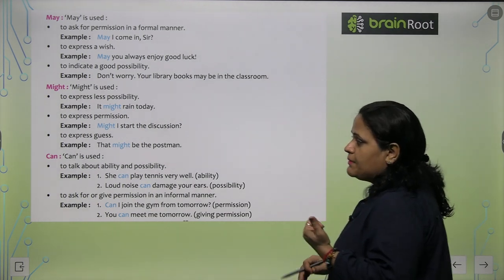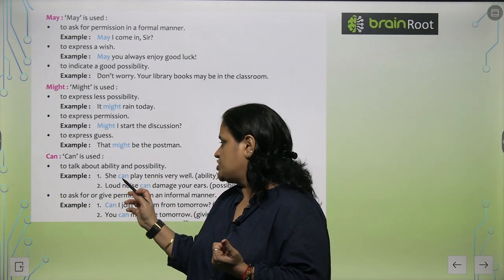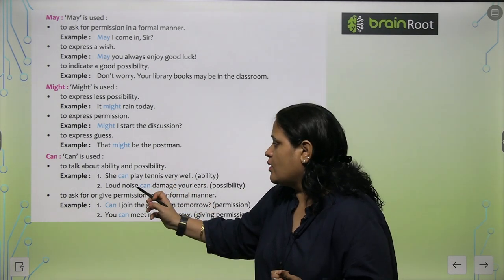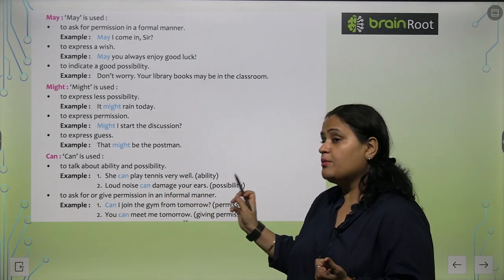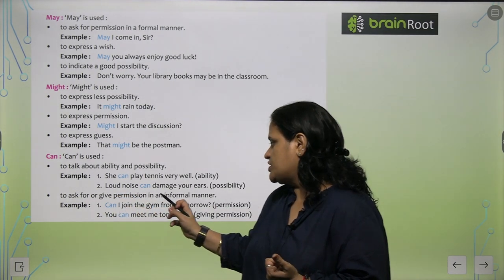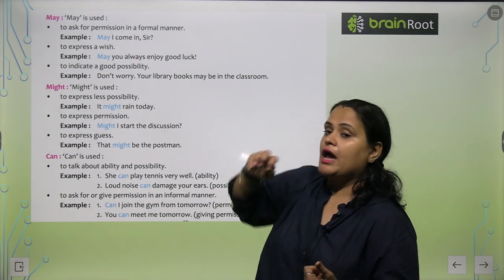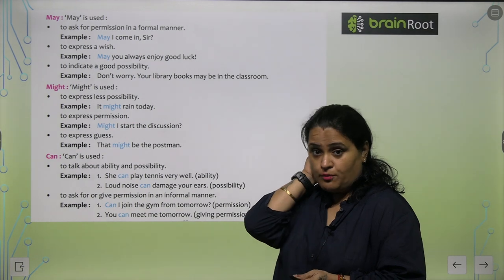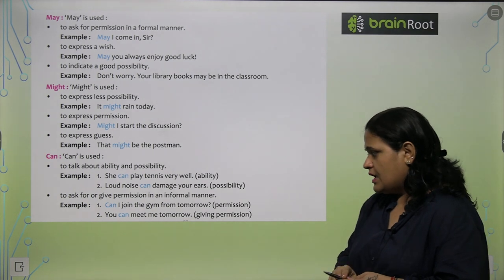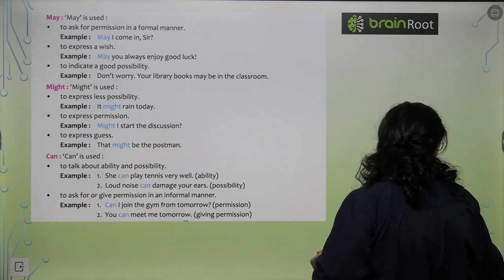'Can' is used to talk about ability and possibility — like 'She can play tennis very well' (ability), and 'Loud noise can damage your ears' (possibility). To ask for or give permission in an informal manner — formal mein 'may' use hoga, informal mein 'can' — like 'You can meet me tomorrow.' Also for giving permission — like 'Can I join the gym from tomorrow?'